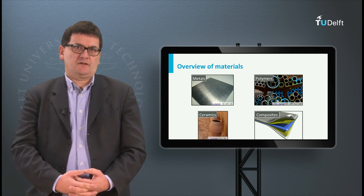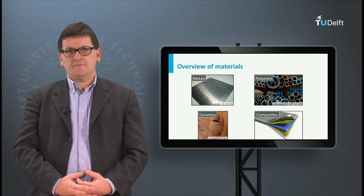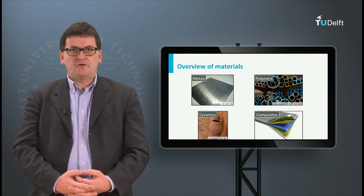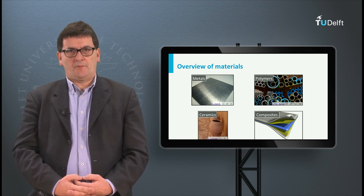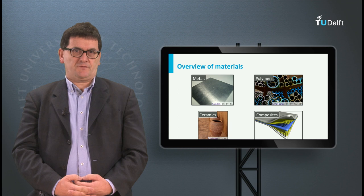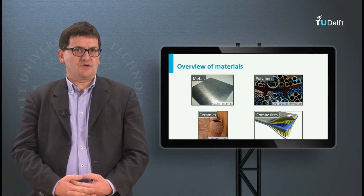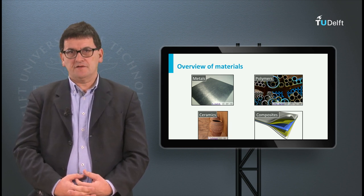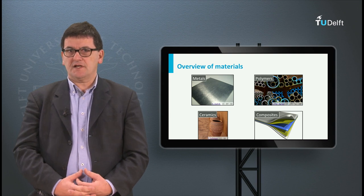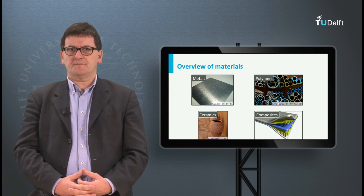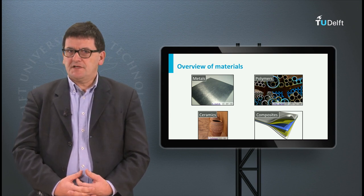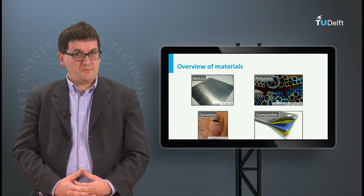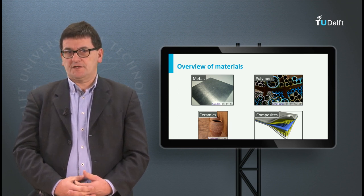Each of these categories has a huge diversity. Metals for example have many different groups like steel, copper alloys, etc. And each group has many different variants. There are thousands of different aluminium alloys and grades. Similar diversity is there for other materials, like the polymers or plastics, and the composites.